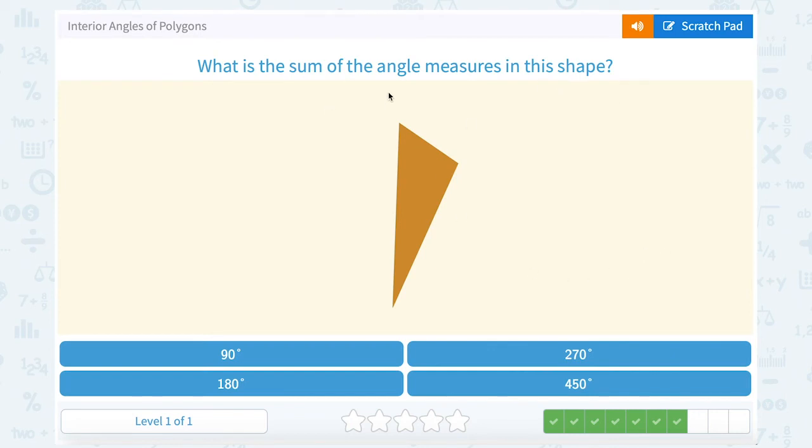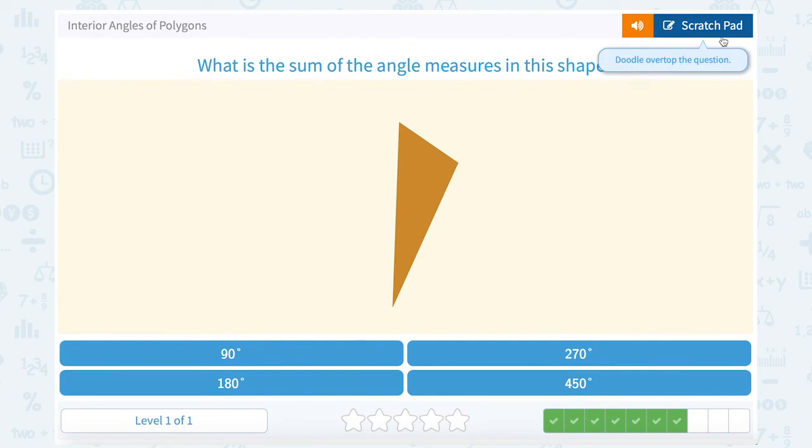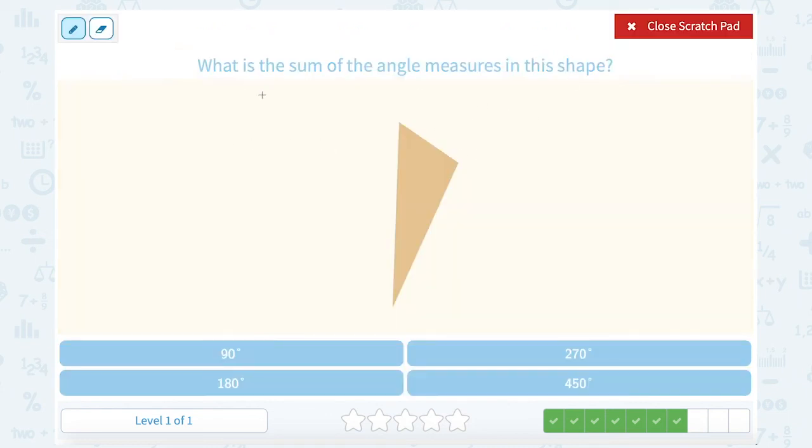What is the sum of the angle measures in this shape? You might already have this one memorized because we've worked with triangles a little bit. But just in case, I want to show you that we could use the same formula that we used just a moment ago, n minus 2 times 180. n stood for the number of sides. So a triangle has 1, 2, 3 sides. That means we would say 3 minus 2 times 180. 3 minus 2 is just 1, so 1 times 180 gives us 180 degrees. Which, if you remember, is what you might already have memorized for the three angles in a triangle. Add up to 180.